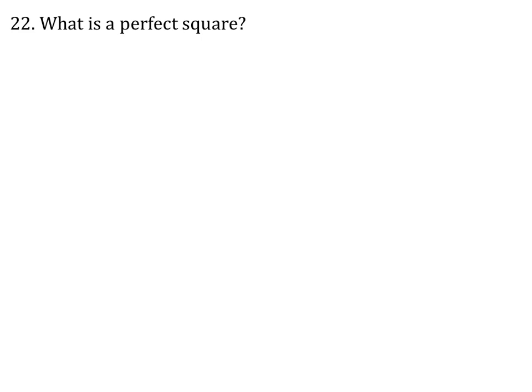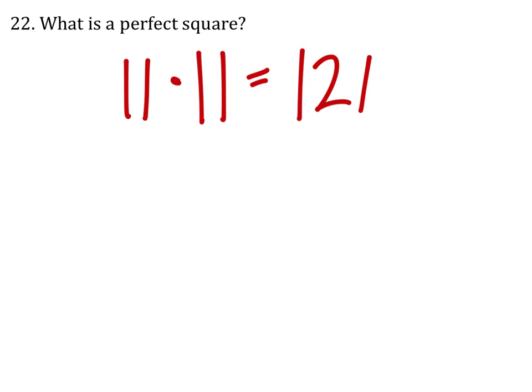What is a perfect square? It's when you have a whole value or integer value, such as 11, and we multiply it by itself — 11. That gives us what is called a perfect square: 121. So it's when you have a whole number multiplied by itself, an integer.